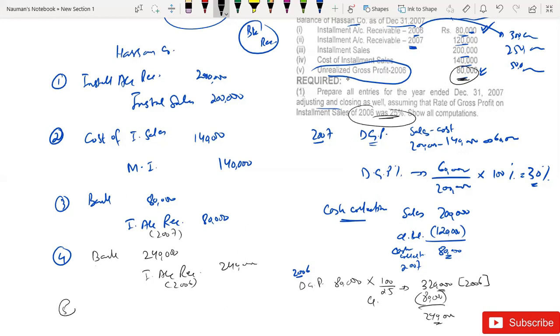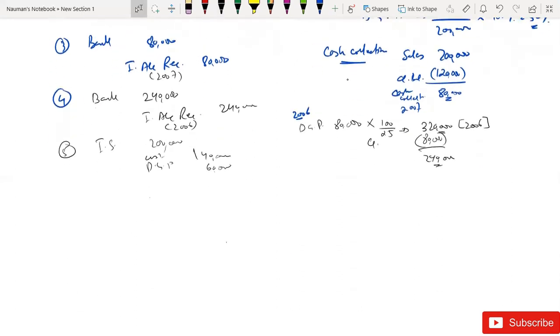Now the next entry will be the adjusting entries. Installment sale debit 200,000, cost credit 140,000, and deferred gross profit 60,000. I have to convert this. The deferred gross profit debit will be equal to an amount. The deferred gross profit will be for 2007 and for 2006.